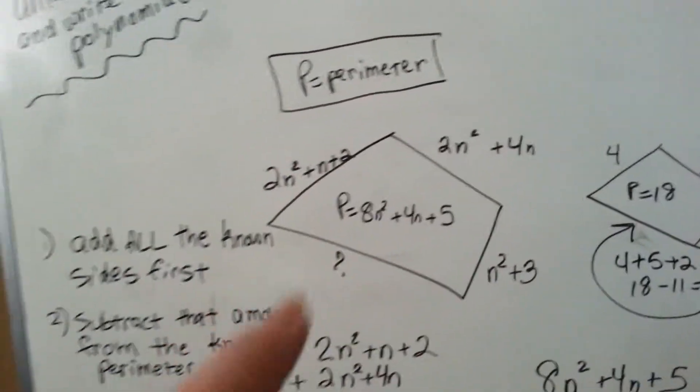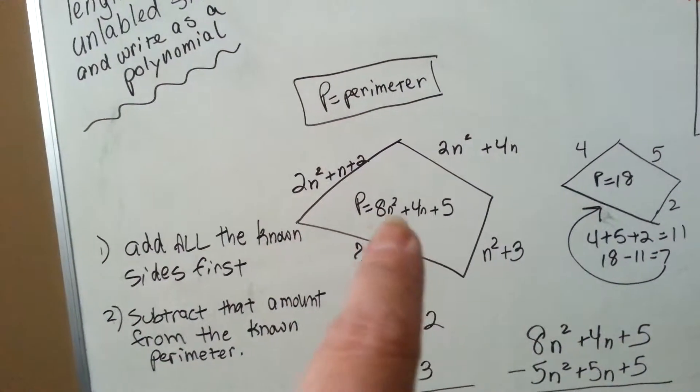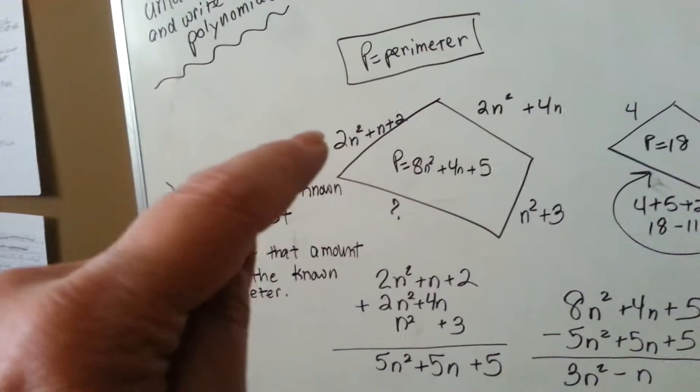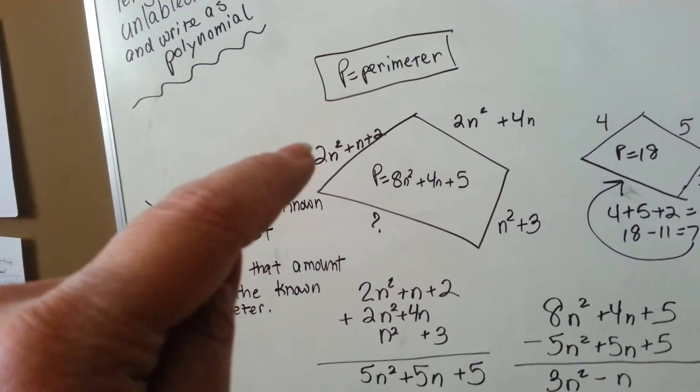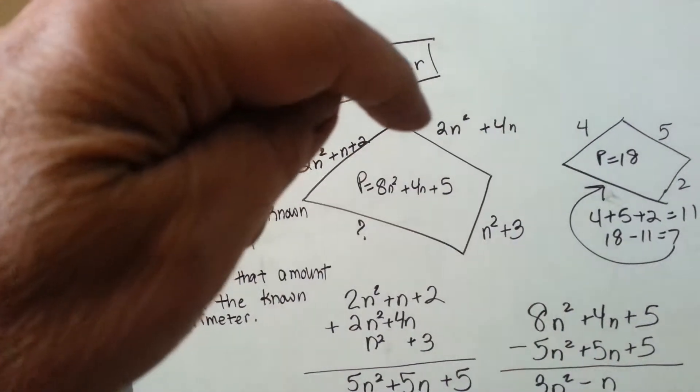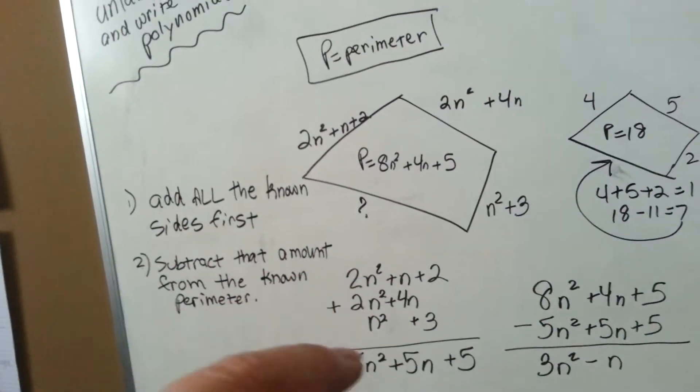So we're going to do the same thing with this. We're going to add up all the known sides and then we're going to take it away from this to get the final answer. So we've got this one, 2n squared plus n plus 2. We've got 2n squared plus 4n, and we've got n squared plus 3. We're going to add up and combine the like terms.